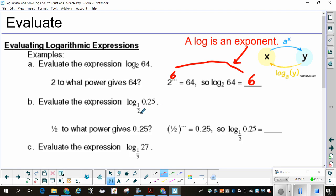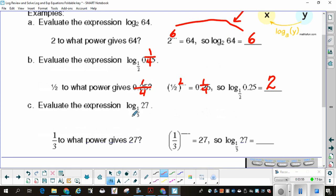Now here, when you have log base 1/2 of 0.25, it's easier to change 0.25 into 1/4. Why? Because then they're both in fraction form. Now you can think 1/2 to what power gives 1/4. If I square 1/2, 1/2 times 1/2 will be 1/4. So log base 1/2 of 0.25 is 2. Your base can be a fraction.